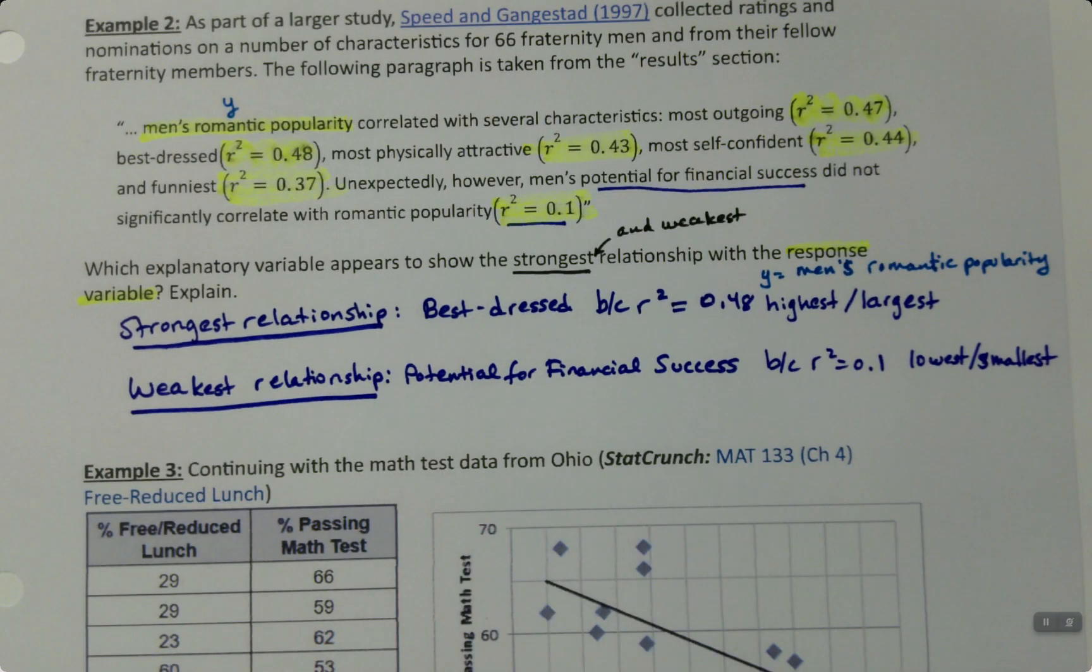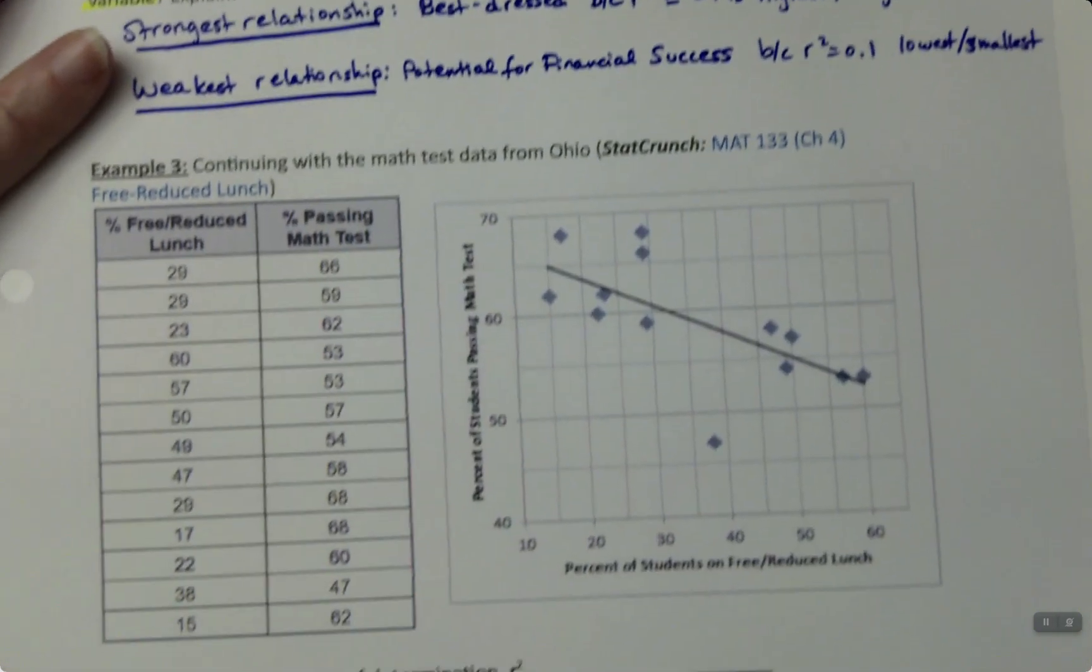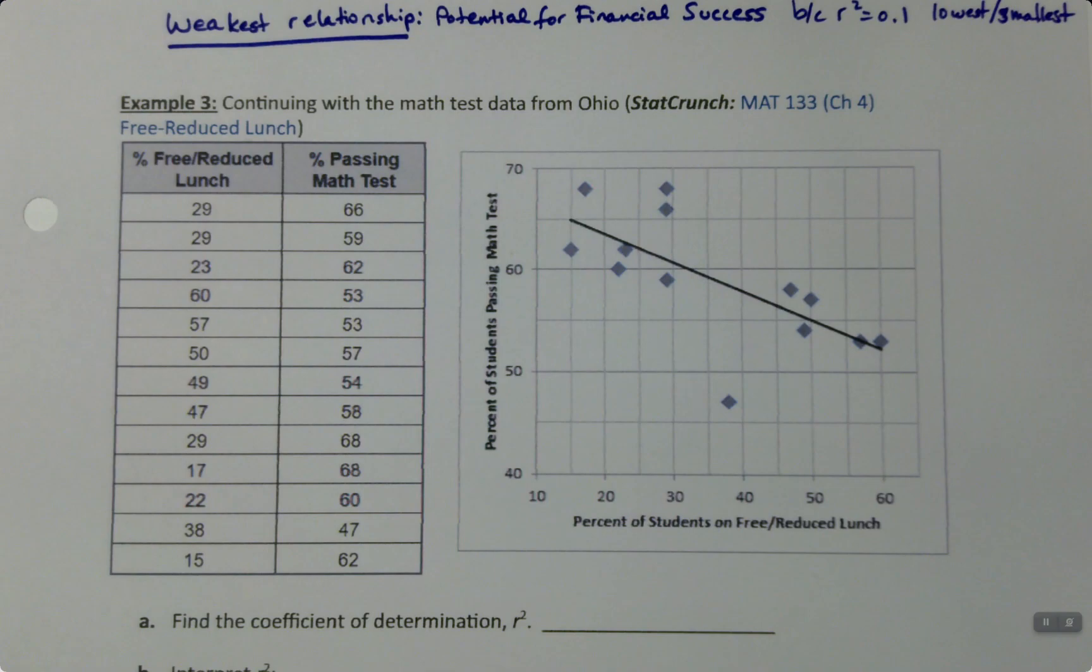Now, how do we find R-squared? We find R-squared using StatCrunch in the same way that we have throughout Chapter 4.